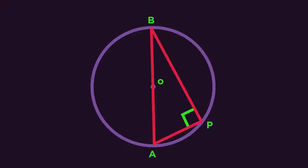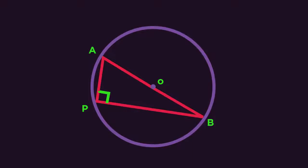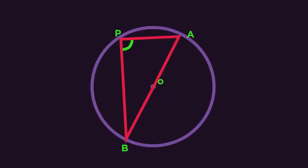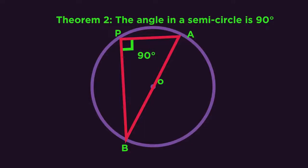So here's theorem two. We have a semicircle. What do you notice about the angle? The angle in a semicircle is always 90 degrees and that's theorem two.